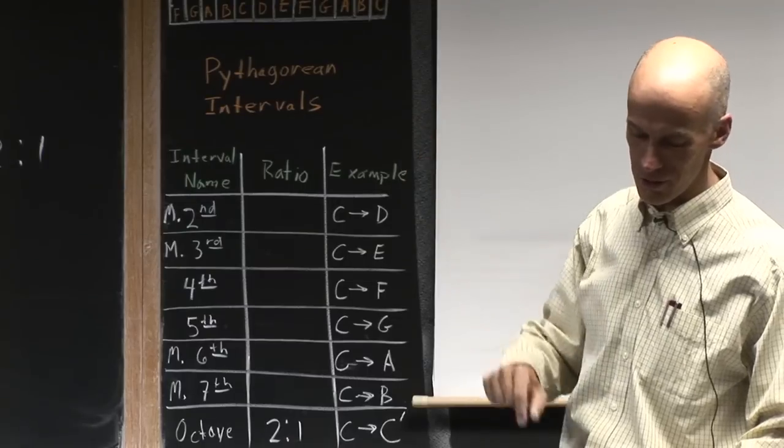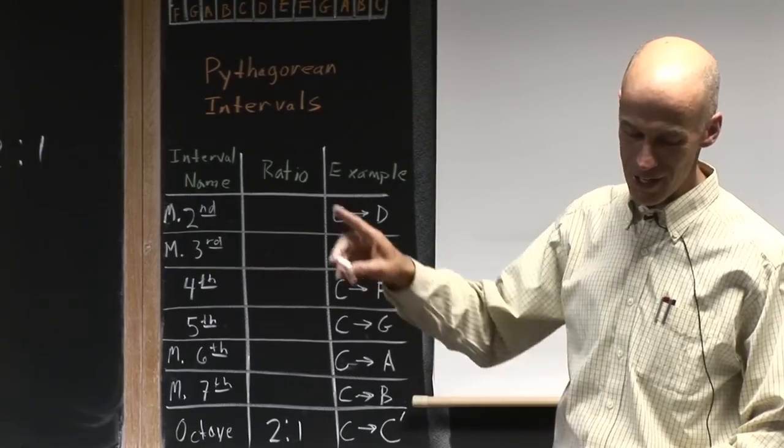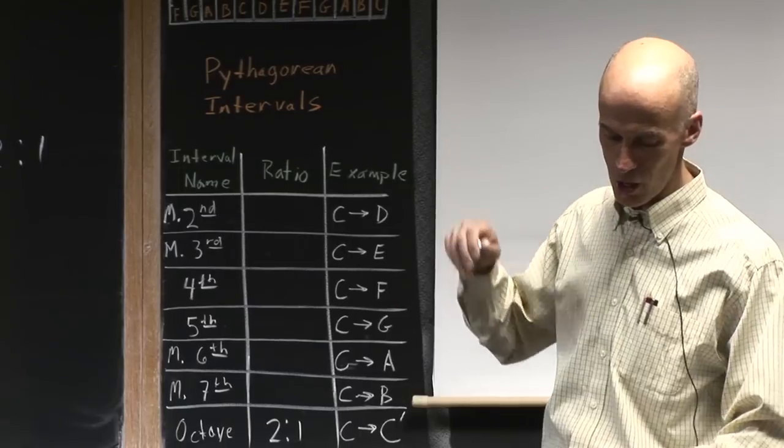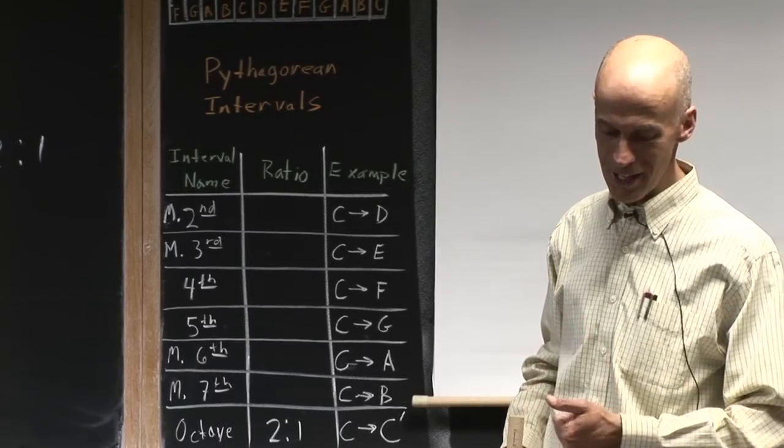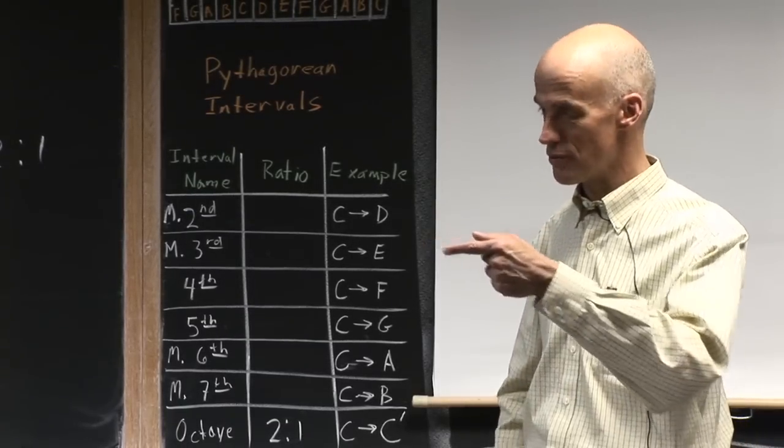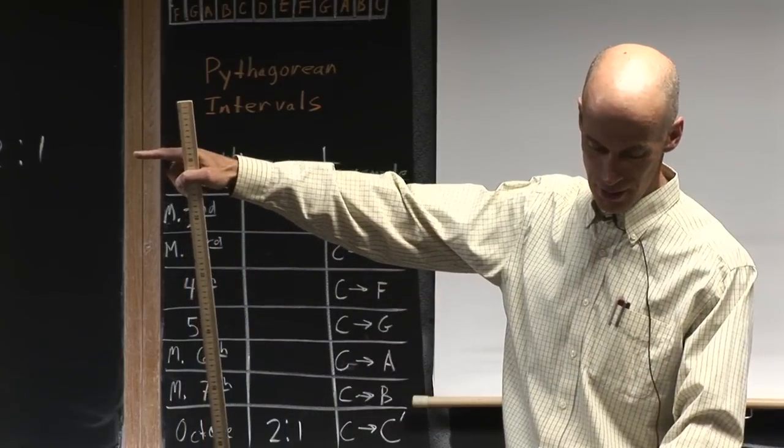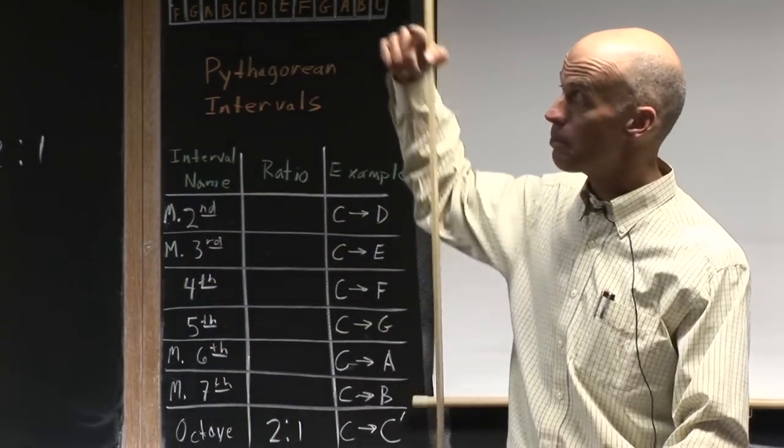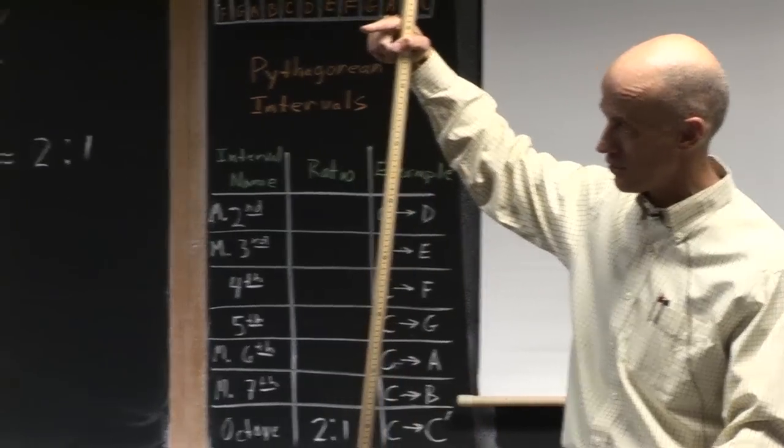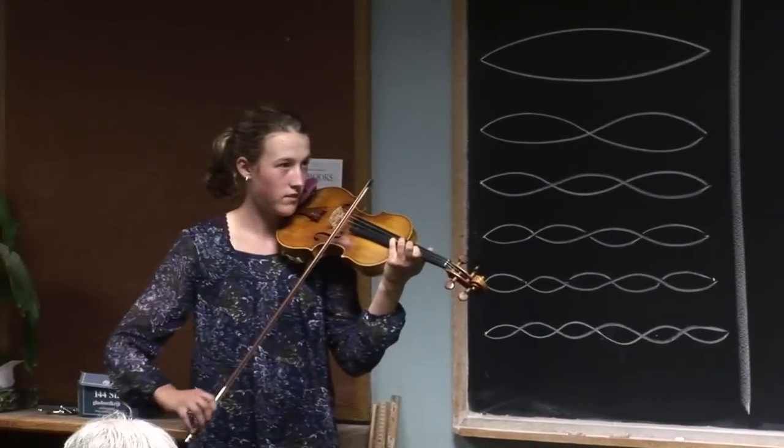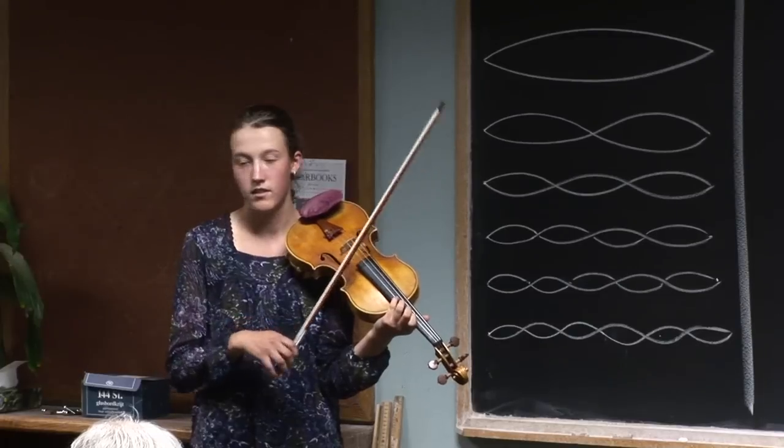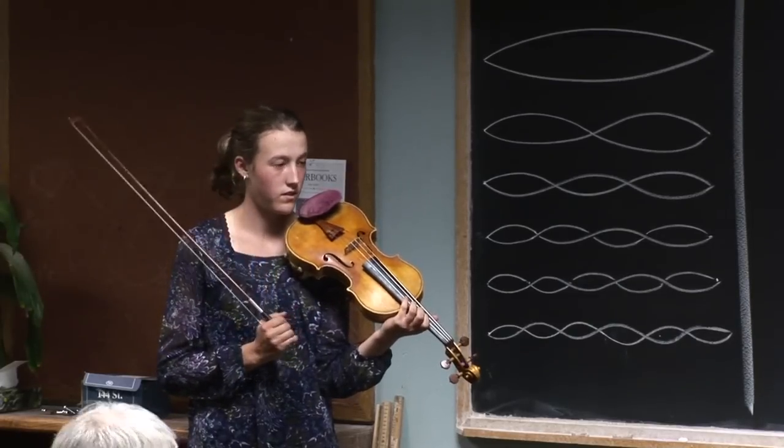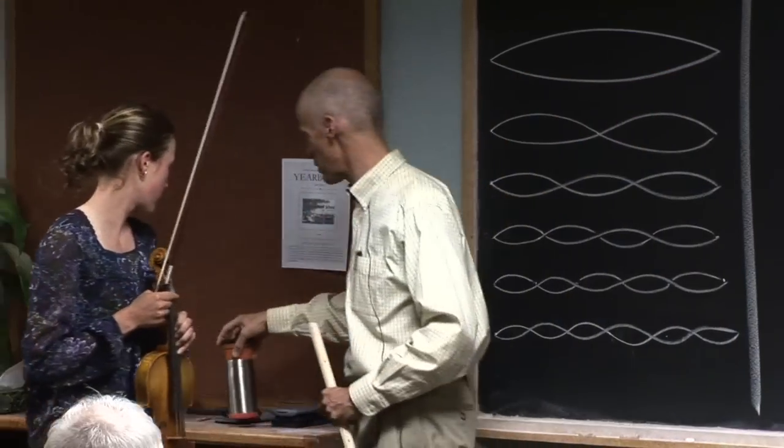And then the third assignment that I'd like you to do is again on the A, back to the A string. I'd like you to go from C and then up. On the A string, the C, and then up a fifth from there on the A string. Can you do that? Did that work? Okay, so three assignments. Let's see if we can do that, measure, and if you need a calculator, each group should have a calculator.